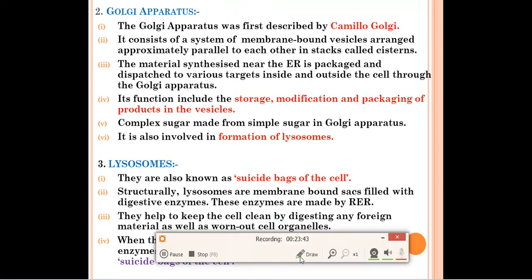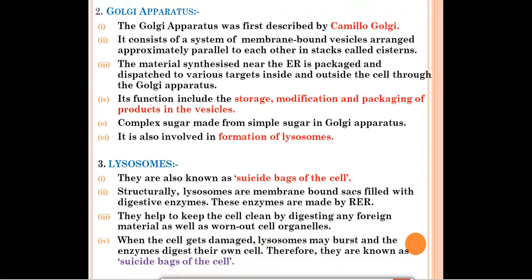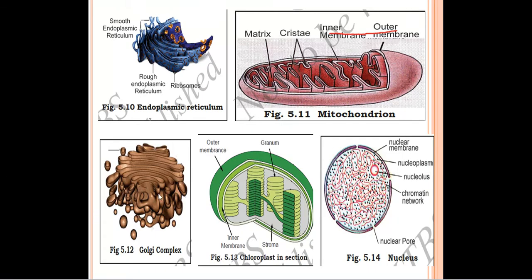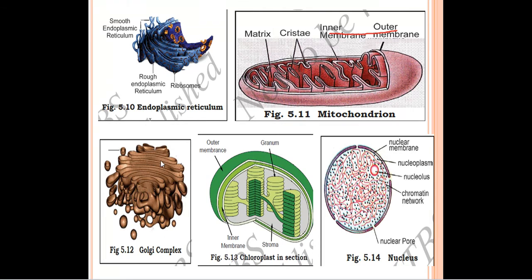Our next cell organelle is Golgi apparatus, discovered by scientist Camillo Golgi — this apparatus was named after him. It consists of a system of membrane-bound vesicles arranged approximately parallel to each other in stacks called cisternae. In the diagram of Golgi apparatus, these parallel vesicles arranged in stacks are clearly visible.